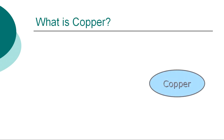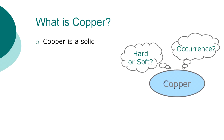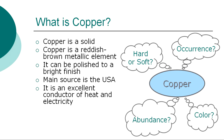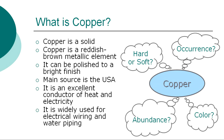In a general overview of the element, we can first describe copper as a solid. It is a reddish-brown metallic element that can be polished to a bright finish. The main source of copper is the USA, but it can also be found in Canada, Chile, Peru, and Russia, and to a limited extent in Europe. It is an excellent conductor of heat and electricity, and is widely used for electrical wiring, water piping, and corrosion-resistant parts.